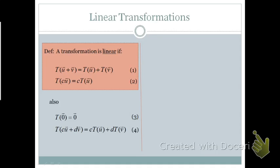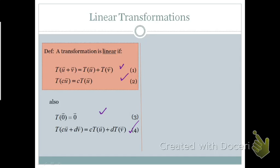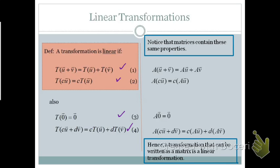Now we want to look at when a transformation is linear. If a transformation is linear, then these properties hold: T(u + v) = T(u) + T(v), and T(c·u) = c·T(u) for any scalar c. Also, T of the zero vector equals the zero vector, and T(c·u + d·v) = c·T(u) + d·T(v). Since matrices have these same properties, a transformation that can be written as a matrix equation is a linear transformation.